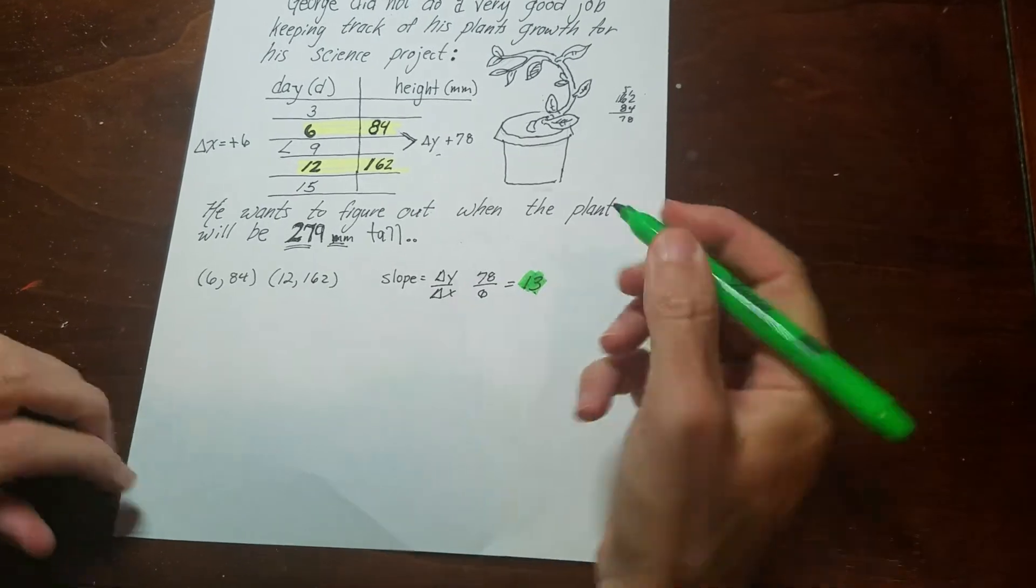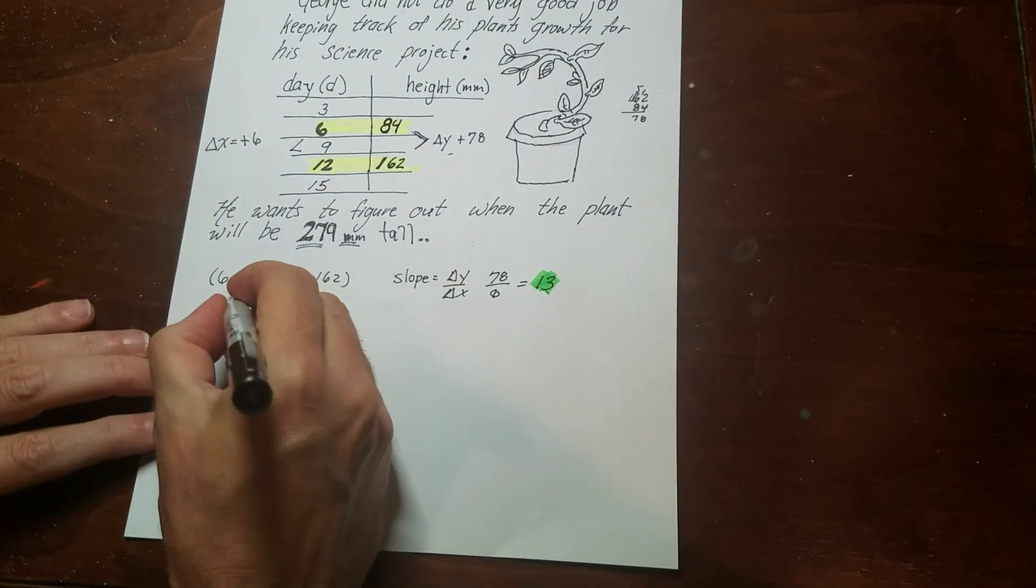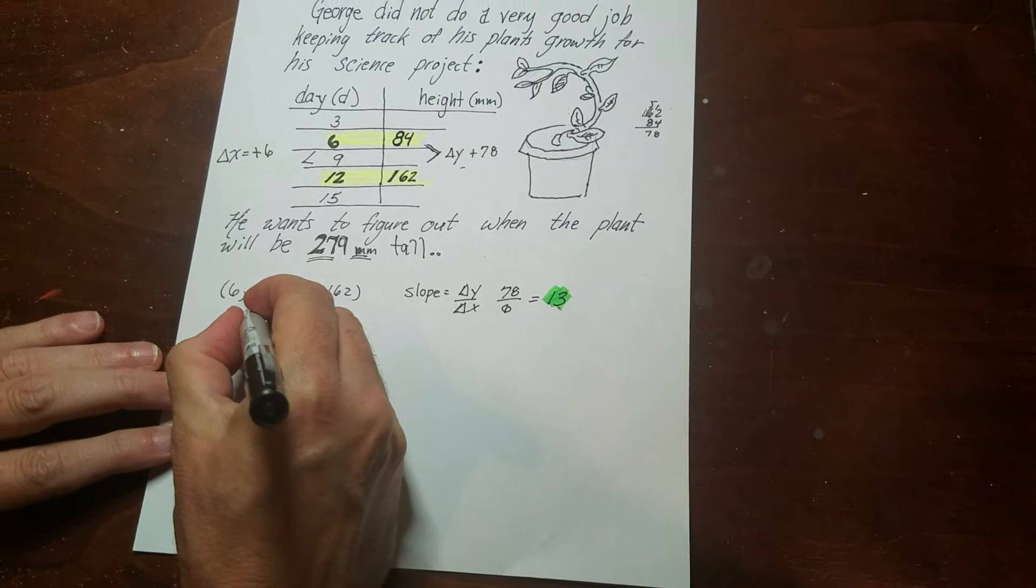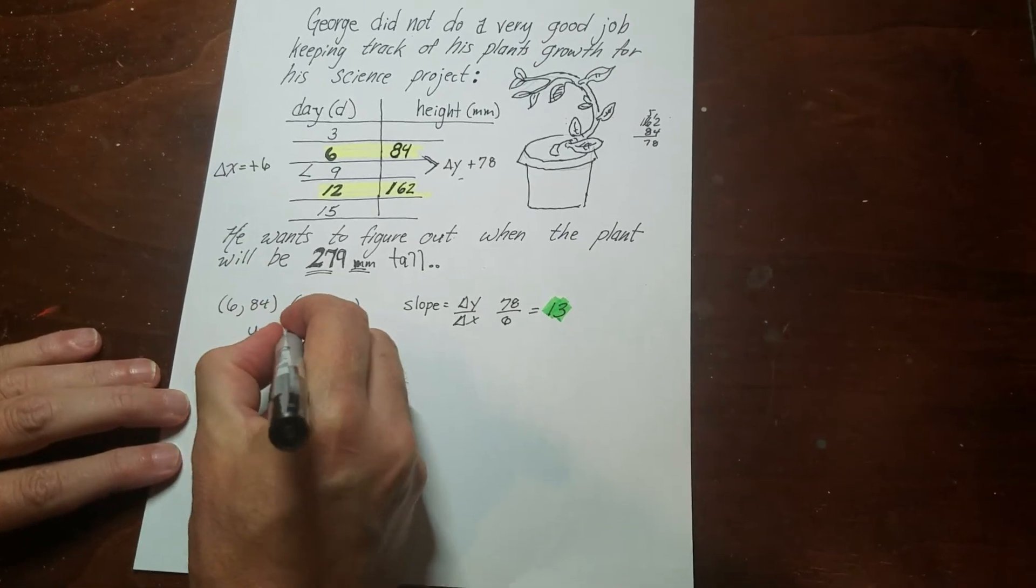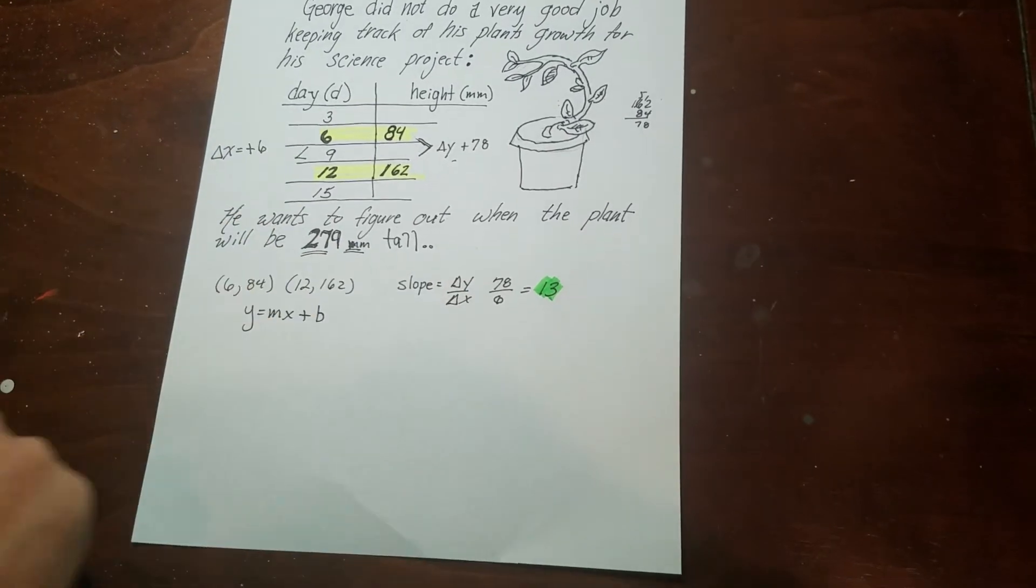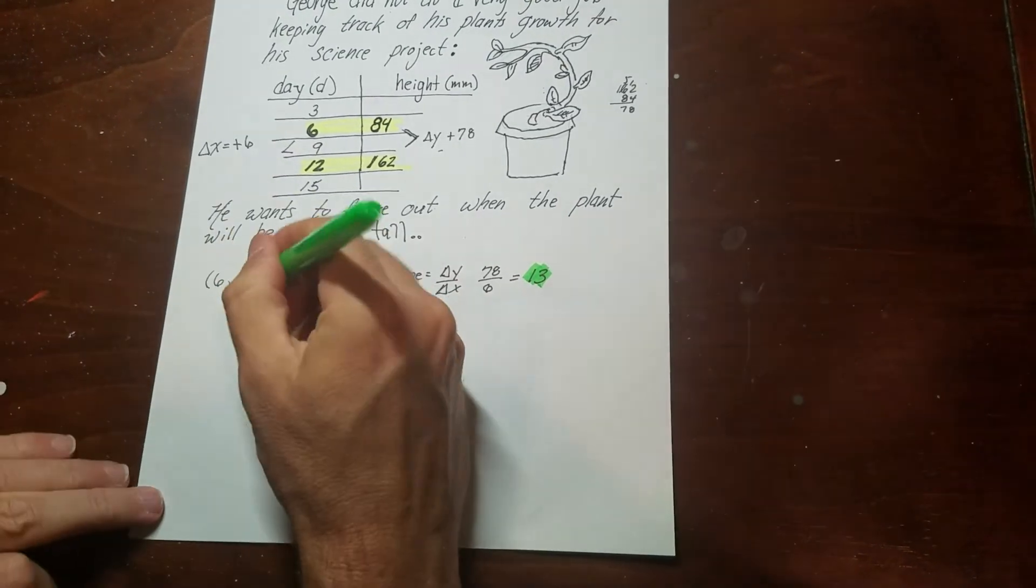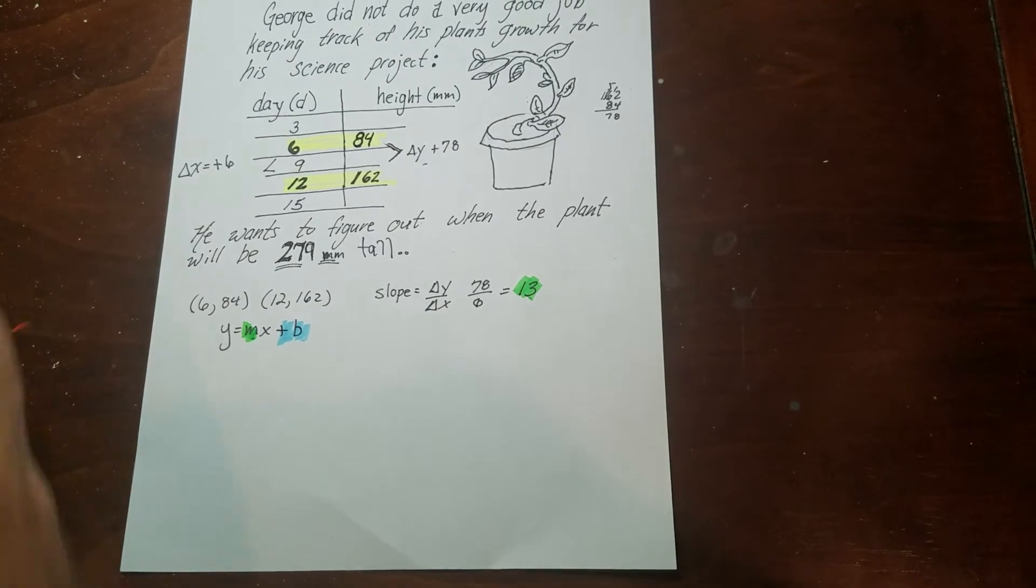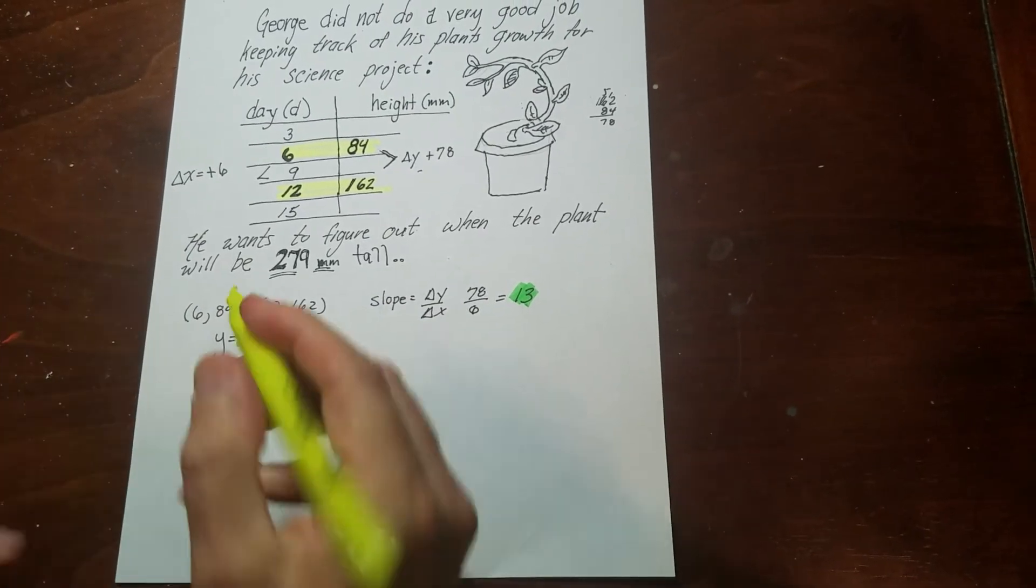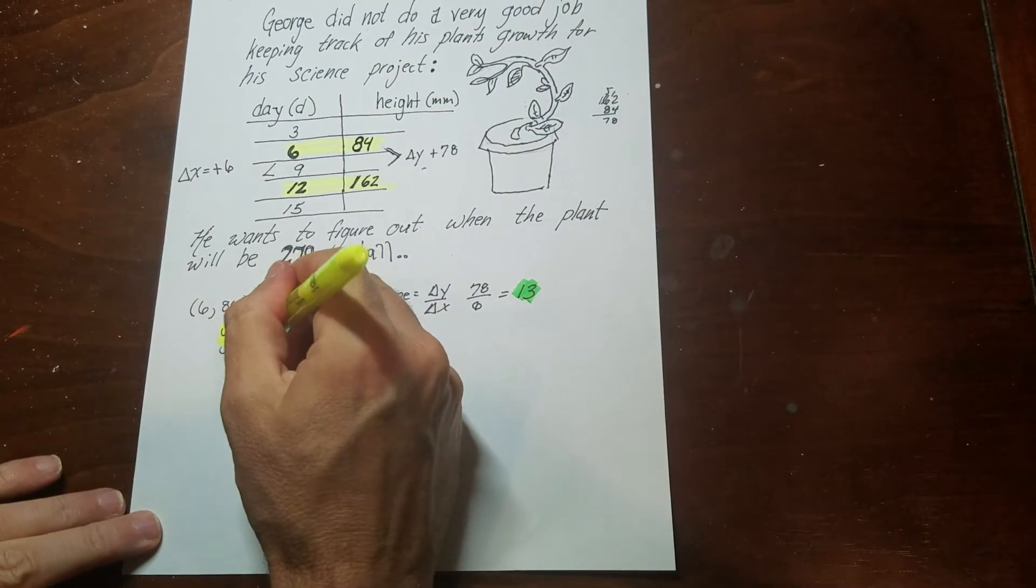Now when you're working with lines, especially when you get these word problems, you should learn about this formula, which is y equals mx plus b. We've got our b term, our slope, and then an input and output from the table. So that's what these would be.